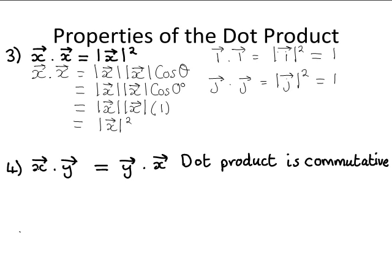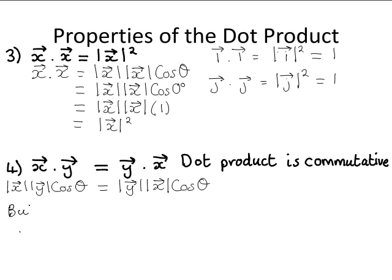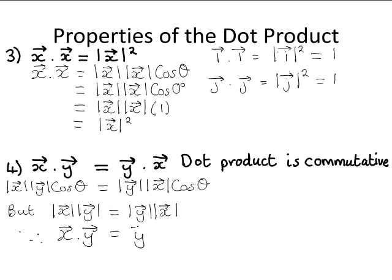Another property is that the dot product of x with y is equal to the dot product of y with x — so the dot product is commutative. From the definition, x dot y equals the modulus of vector x times the modulus of vector y times the cosine of the smaller angle between x and y. The dot product of y with x equals the modulus of vector y times the modulus of vector x times the same cosine. Since the modulus of vector x times the modulus of vector y equals the modulus of vector y times the modulus of vector x, therefore x dotted with y equals y dotted with x.